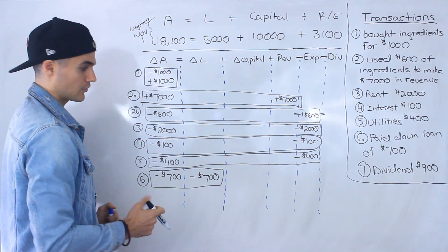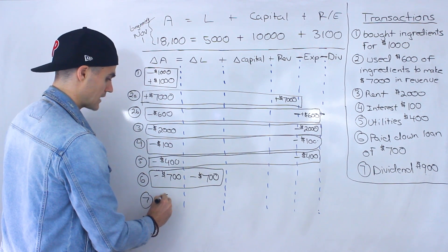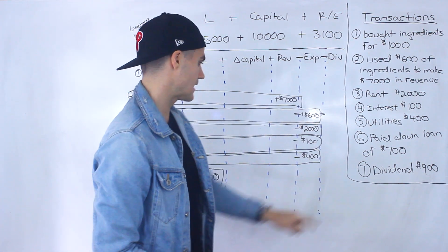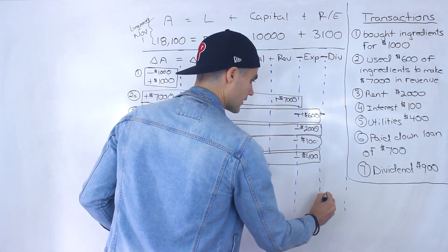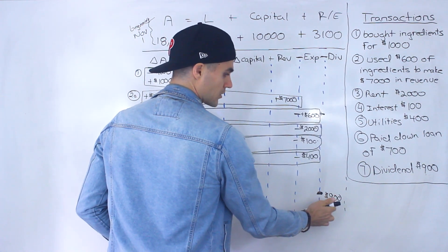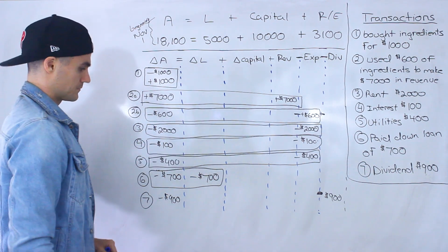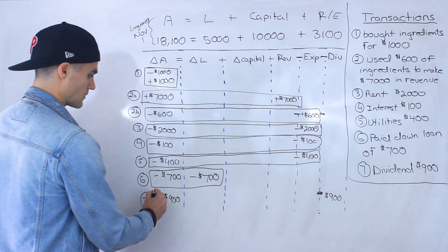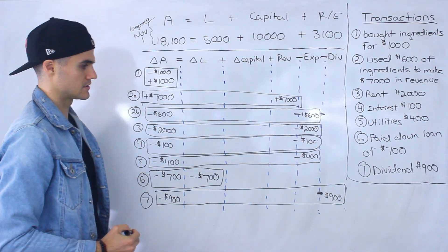Transaction 7: a dividend of $900 paid with cash. Assets go down by $900. The dividends column is the last column — I'll put $900 there. Since we're subtracting the dividends column, plus $900 in that column equals minus $900, balancing the minus $900 in assets. Those balance out, and that's transaction 7.